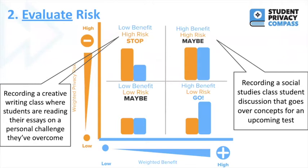Getting back to the fact that context really matters, we took this scenario and specified it in two different ways. Say you want to record a creative writing class where students are reading their essays on a personal challenge they've overcome. This probably falls in the quadrant of low benefit and high risk, and therefore teachers shouldn't record the class. There doesn't seem to be a benefit to recording students reading their essays, as it probably won't advance any learning to later rewatch or study for an exam, and students might share really private or sensitive information they wouldn't want recorded or shared.